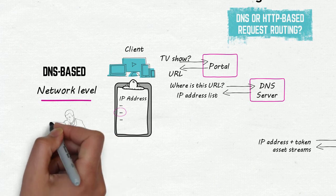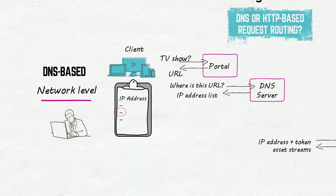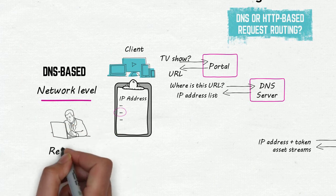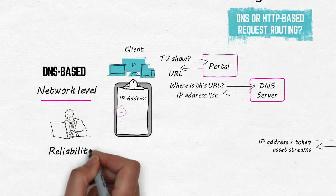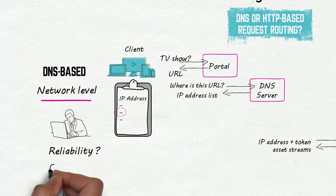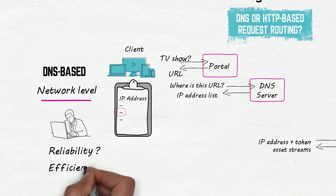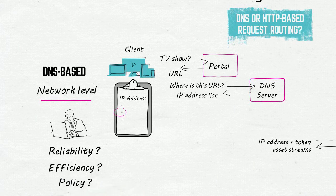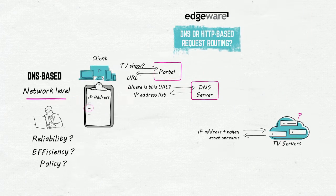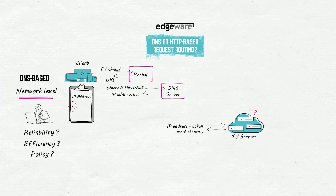It may route to a server that's not working or is missing the content. Assets can't be stored in a hierarchy of caches, so cache memory isn't used efficiently. And it's hard to enforce policies that guarantee only authorised viewers can access the content.